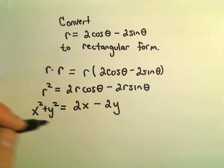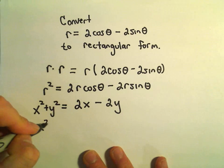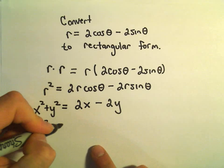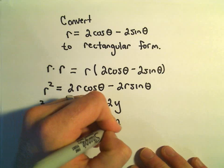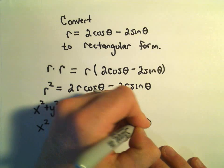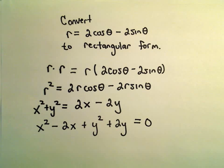So now we've got it into rectangular coordinates. I still don't look at that and say I know exactly what the graph of that is. But the way that we can do that is we can subtract the 2x over to the left. We can add the 2y to the left. That'll leave us with 0 on the right.